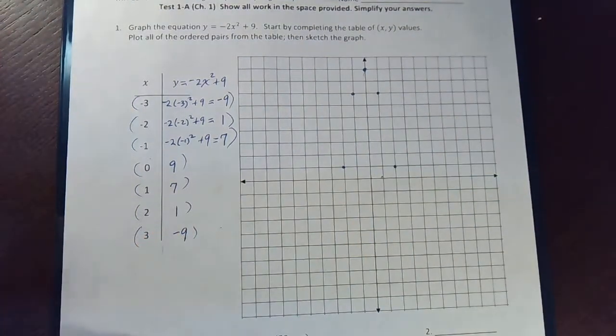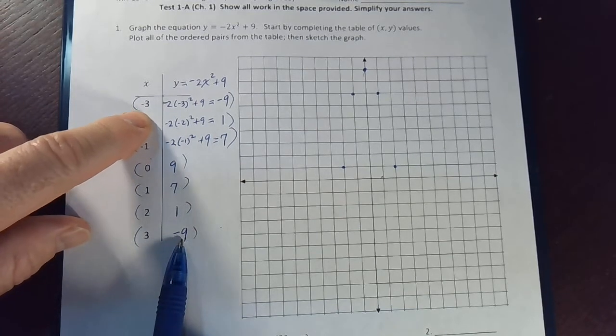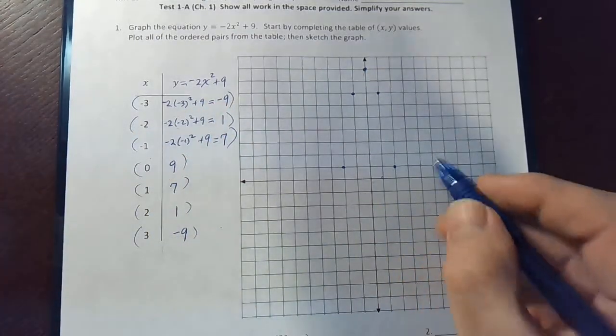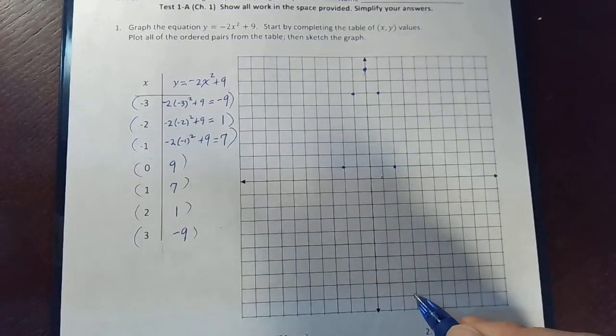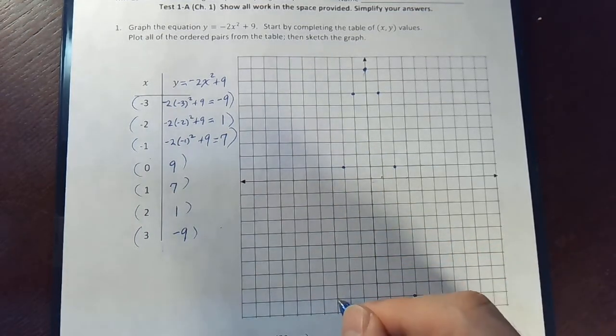And finally, the last two points are for x equal 3 or negative 3. The height of the function is negative 9. So at 3, we count down negative 9. And at negative 3, we count down negative 9.